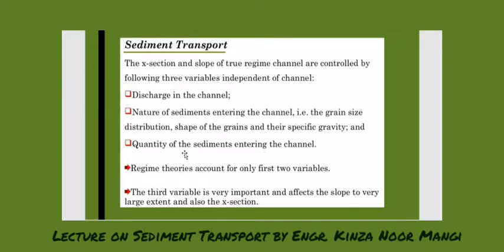Regime theories account for only two variables — discharge in the channel and nature of the sediment — but the third variable is very important and affects the slope to a very large extent, and also the cross-section. If we know how much sediment is entering the channel, we can determine how much it is reducing the storage capacity and affecting the actual dimensions of the channel.